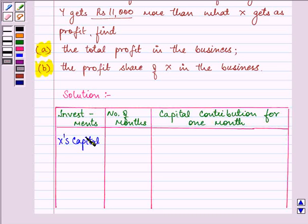Now, X's capital is in the ratio, X and Y's capital is in the ratio 3 is to 2. So X's capital will be 3X for initial 3 months and then after 3 months he reduced his capital by one-third.